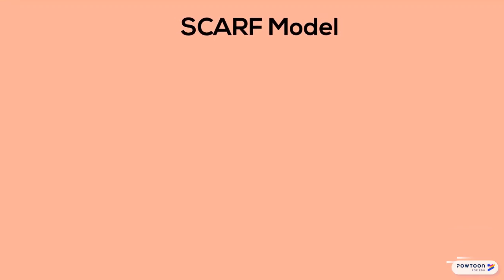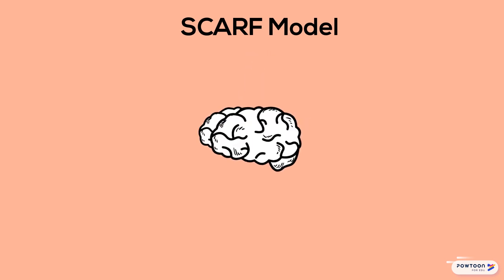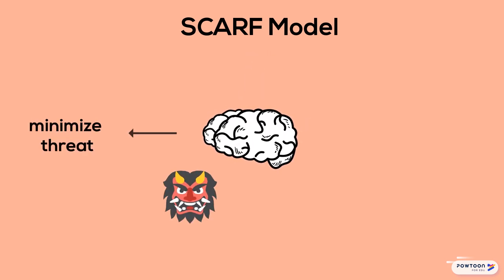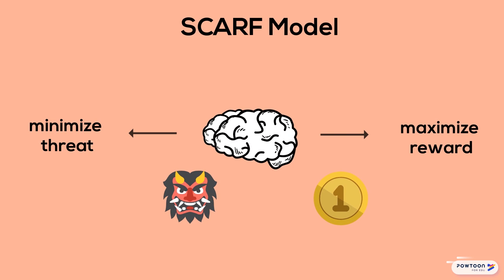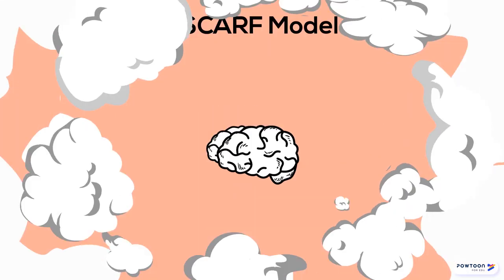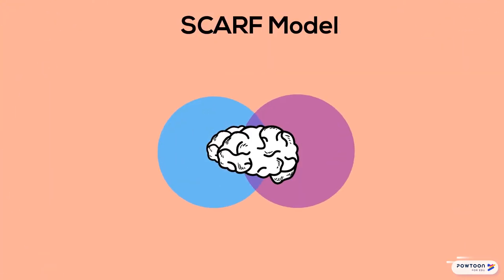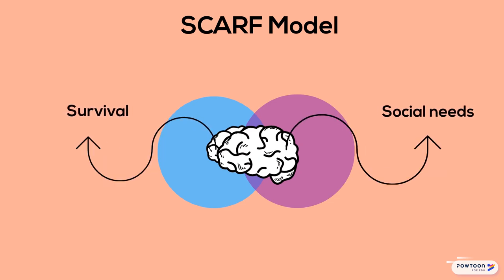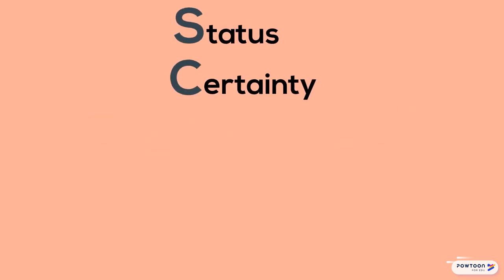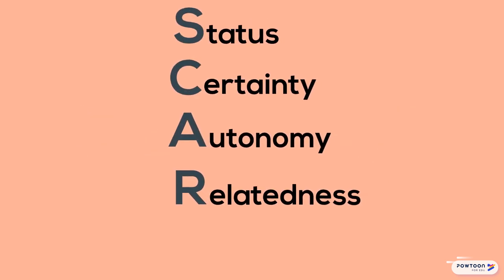The theory of the SCARF model is based on two general principles from neuroscience. The first is that the organizing principle of the brain is to minimize threat and maximize reward. The second is that there's a fundamental overlap in the brain between the regions that control survival and social needs. SCARF is an acronym for five different social domains where we experience threat and reward.